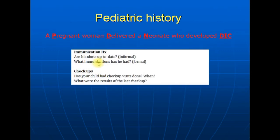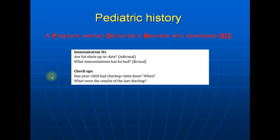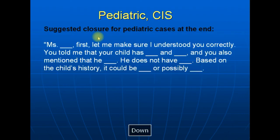For immunization, there is a formal and informal way. The formal way: ask 'What immunization has he had?' The informal way: ask directly about shots. For check-up visits: Has your child had check-up visits done? When was the last time? What were the results of the last check-up? Those are wonderful questions and this is a wonderful mnemonic that can be used in all the cases.